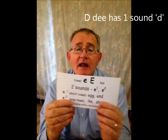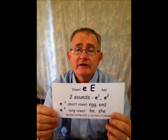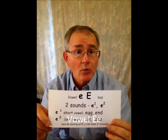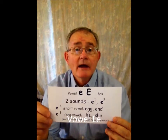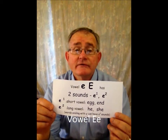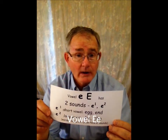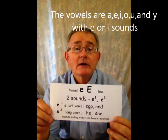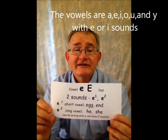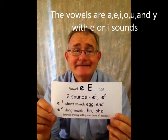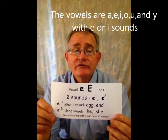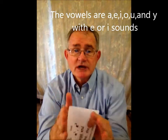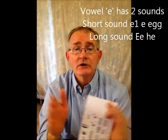Now, vowel E — the second of the vowels. The vowels are A, E, I, O, U, and sometimes Y with an E or I sound. This is the E sound, vowel E. It has two sounds: short sound and long sound.